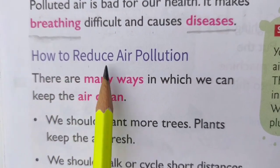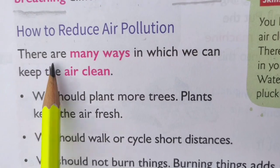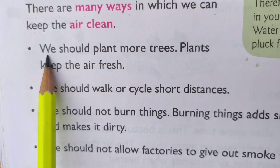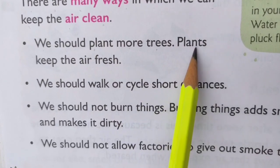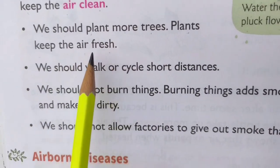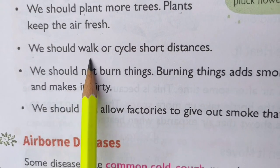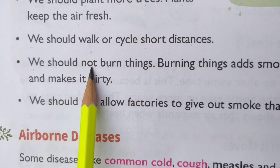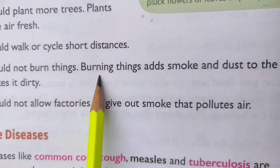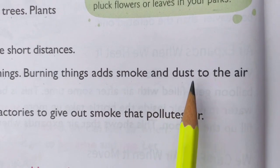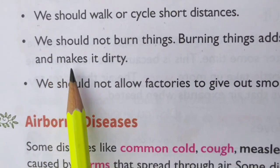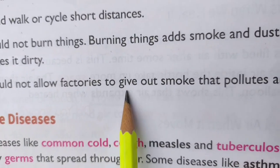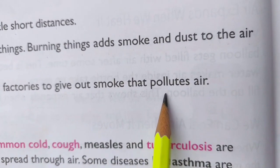How to reduce air pollution? There are many ways in which we can keep the air clean. We should plant more trees. Plants keep the air fresh. We should walk or cycle short distances. We should not burn things. Burning things adds smoke and dust to the air and makes it dirty. We should not allow factories to give out smoke that pollutes air.